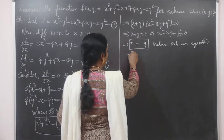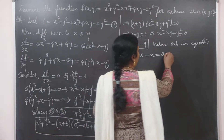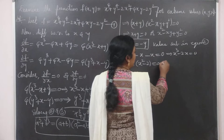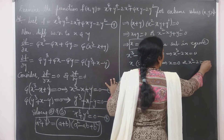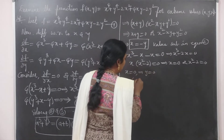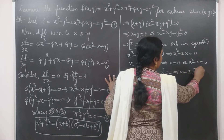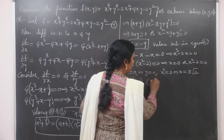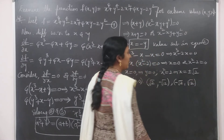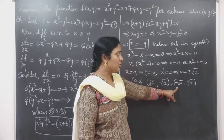Substituting x = -y into equation 2: x³ - x + (-x) = 0, giving x³ - 2x = 0, so x(x² - 2) = 0. Either x = 0 (which gives y = 0) or x² = 2, giving x = ±√2. If x = +√2 then y = -√2; if x = -√2 then y = +√2. Therefore the critical points are (0, 0), (√2, -√2), and (-√2, √2).